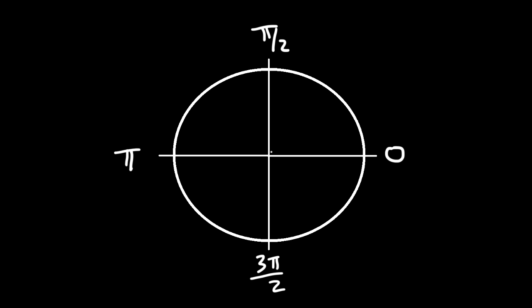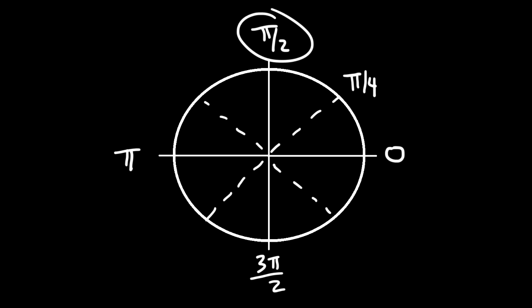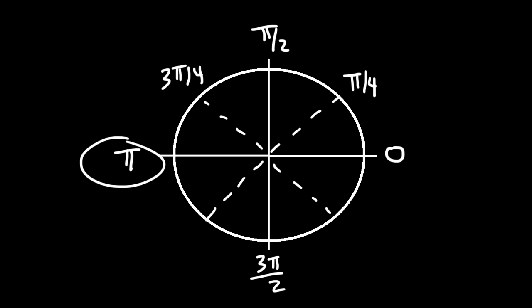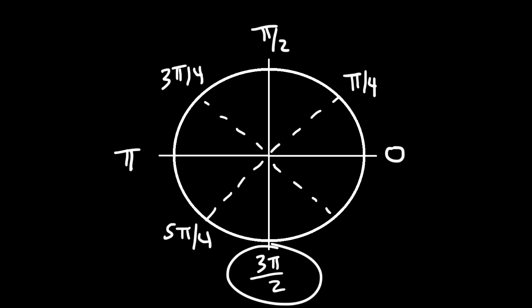Now, what we're going to do is break up the unit circle into 8 equal parts. The first one is going to be π/4. Then 2π/4 reduces to π/2, and here we have 3π/4. Then 4π/4 simplifies to π. This is 5π/4. Then 6π/4 reduces to 3π/2, and this is 7π/4, and 8π/4 is the same as 2π.